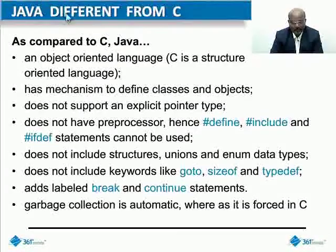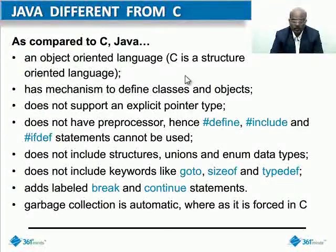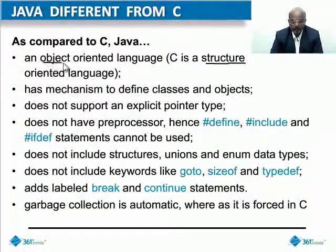Java is different from C in that C is a procedure-oriented programming language, whereas Java is an object-oriented programming language.